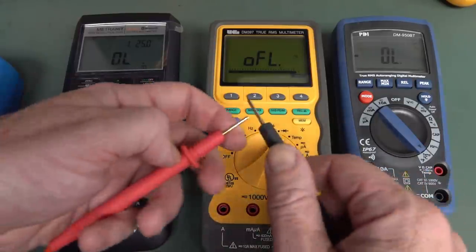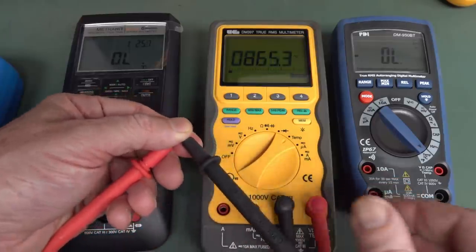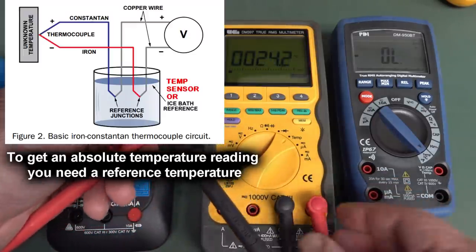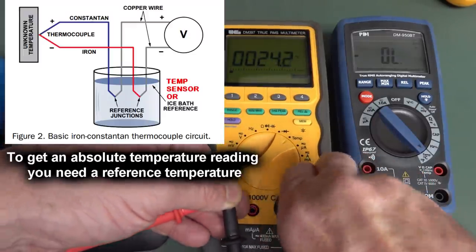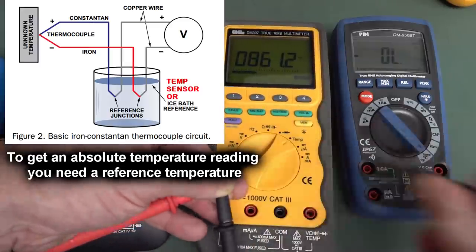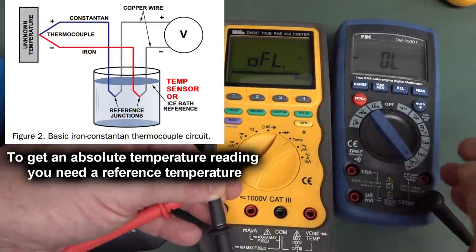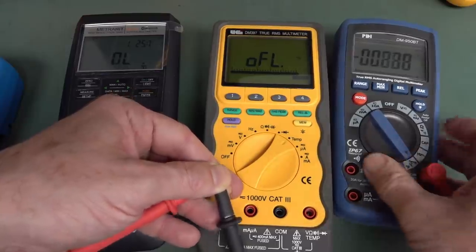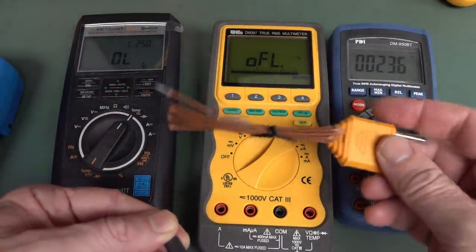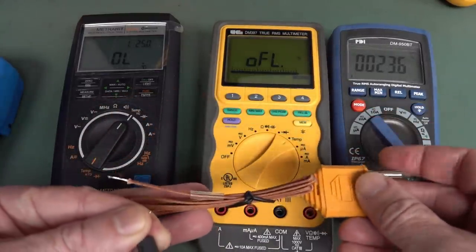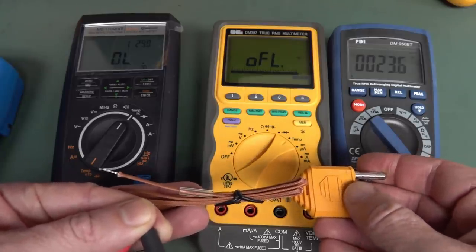And this should work with any meter on the market, because anything, as I said, that uses a K-type thermocouple must have an internal temperature sensor, because that's the only way that it can accurately measure and compensate for the K-type thermocouple like is designed to be used with these meters. You can't do it any other way.